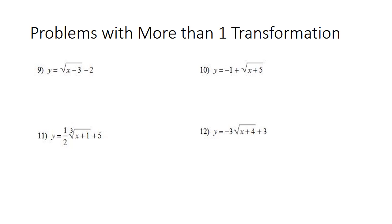These are problems that have more than one transformation in them. Looking at number nine, we have this negative two on the outside of the radical, which means it goes down two, and we have this negative three on the inside of the radical, which means it goes right three. Looking in front of the radical here, there's no negative and there's no number, so this one has not been reflected and it hasn't been dilated.